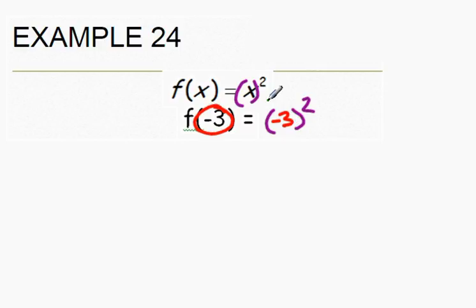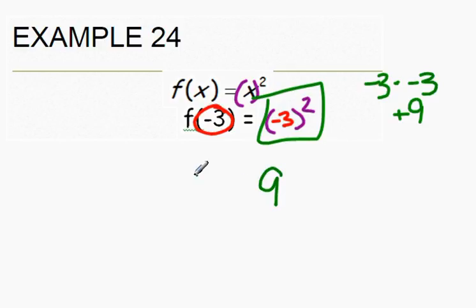Finally, we can simplify negative 3 squared, which means negative 3 multiplied 2 times. The negative times negative will give us a positive, and 3 times 3 is 9. So f of negative 3 equals 9.